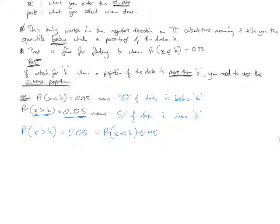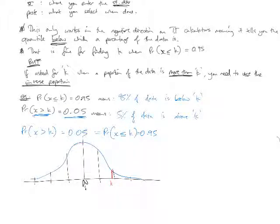The probability of the data being greater than K, if it's 0.05, is going to be the same as the probability of the data being less than or equal to 0.95 in the other direction. Okay. Because, if you look at this.